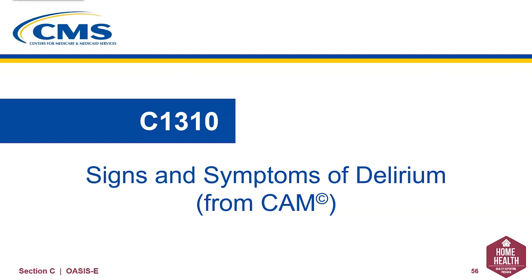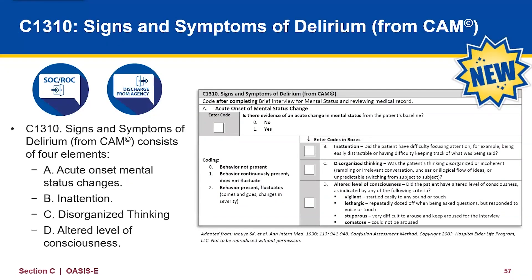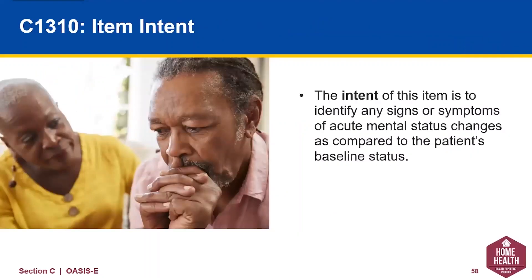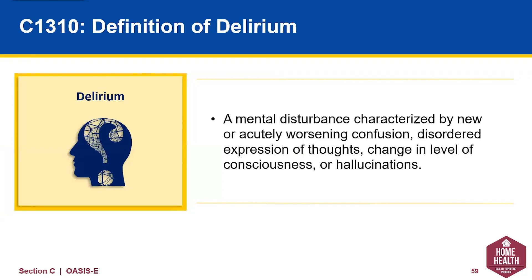Next is C1310, Signs and Symptoms of Delirium from the CAM. This new item consists of four elements: A, acute onset mental status changes; B, inattention; C, disorganized thinking; and D, altered level of consciousness. It is collected at Start-of-Care, Resumption-of-Care, and Discharge. The intent is to identify any signs and symptoms of acute mental status changes compared to the patient's baseline. Delirium is defined as a mental disturbance characterized by new or acutely worsening confusion, disordered expression of thought, changes in level of consciousness, or hallucinations.